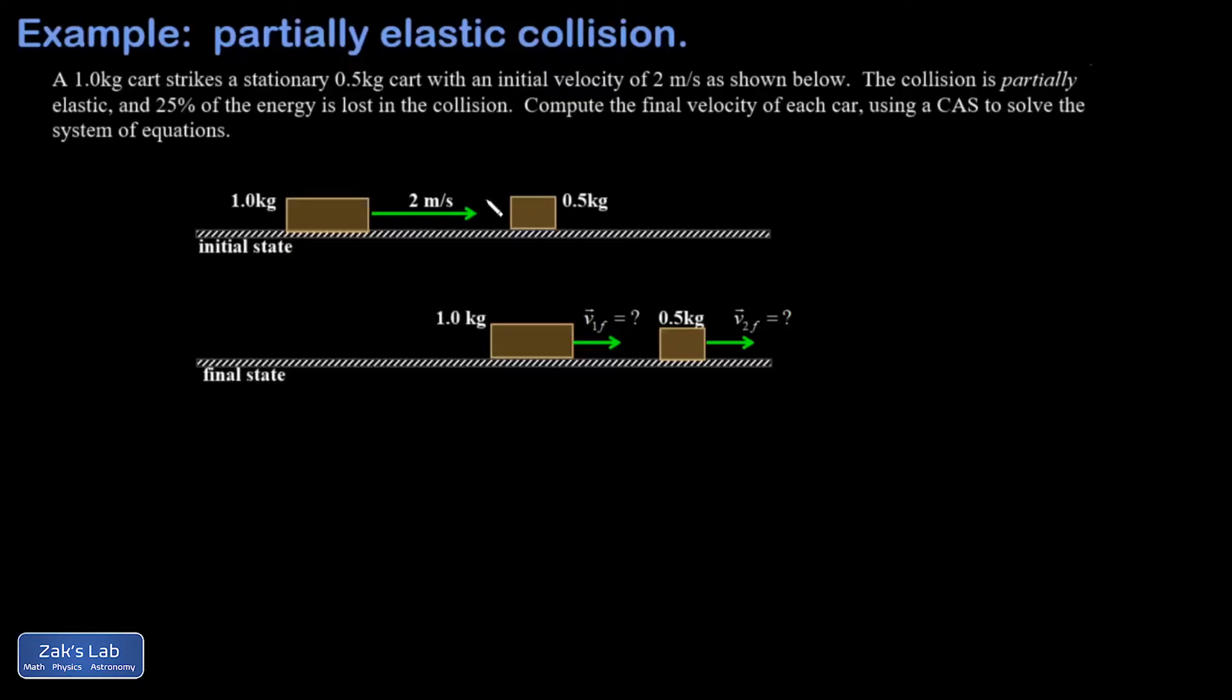In this problem, we have a stationary target cart being struck at 2 meters per second by a 1 kilogram cart. The weird thing is there's some energy loss. 25% of the energy is lost, but they don't necessarily stick together. This is called a partially elastic collision.